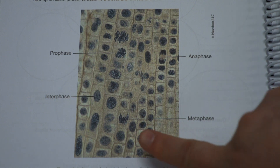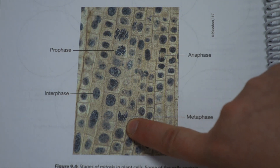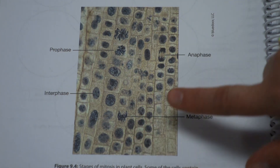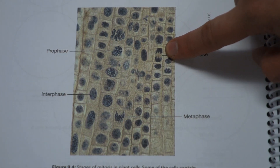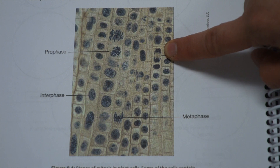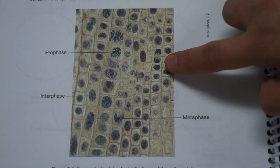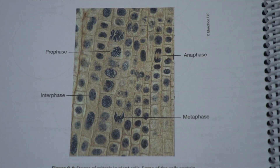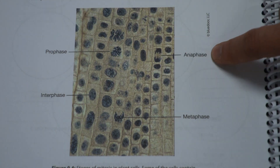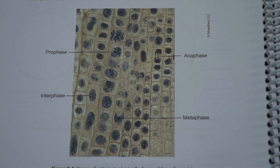So metaphase is lining up in the middle. Then during anaphase, you can physically see the chromosomes pull apart — the sister chromatids separate from each other, and you have single chromosomes on either side of the cell. So during anaphase, that's when we have separation.